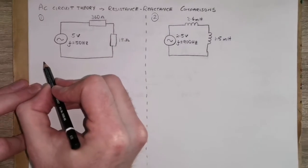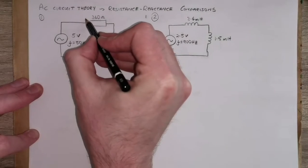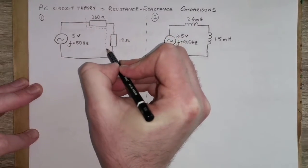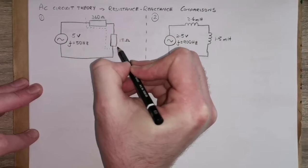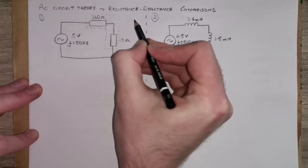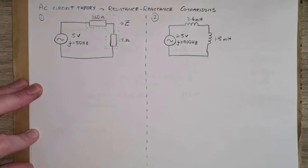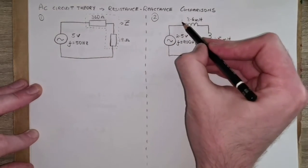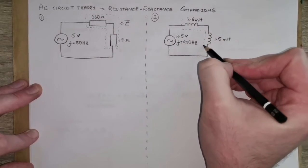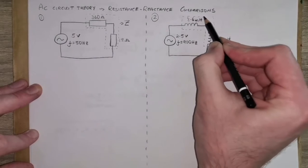In these cases what we're really trying to find is the overall impedance connected to our source. So what is the equivalent impedance of those two elements in series — for both circuits?